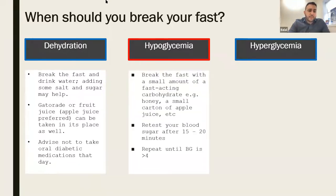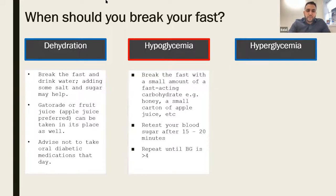The next thing to watch for is hypoglycemia — a low blood sugar level. When your sugar is below four and you're symptomatic, you might feel your heart racing, feel thirsty, or feel anxious — similar symptoms to dehydration. Check your sugar, break the fast with a small amount of something sugary: apple juice, a date, or honey. Retest your sugar 15 to 20 minutes later and repeat until your blood sugar level is over four. Then you can make up the fast at a later date.